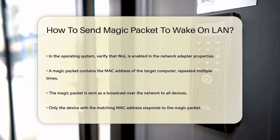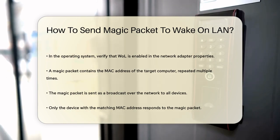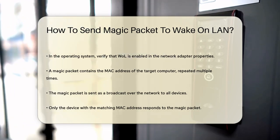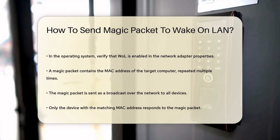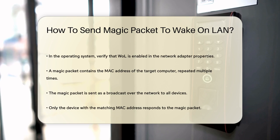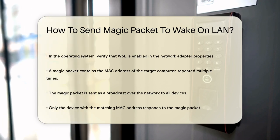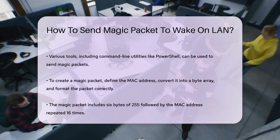To send this magic packet, you can use various tools or even command line utilities. For example, you can use PowerShell on Windows. Here's a simple script to get you started: define the MAC address of the device you want to wake, convert it into a byte array, create the magic packet with six bytes of all 255 followed by the MAC address repeated 16 times, and then send it using a UDP client.